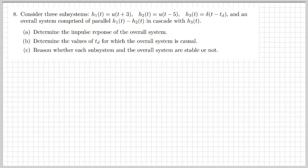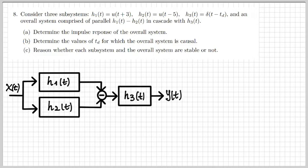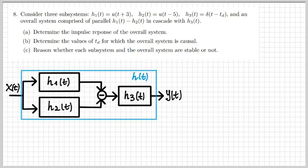Let's move on to another exercise. Here we have three subsystems h1, h2, and h3, where the overall system is constructed by putting two of them in parallel and then the parallel in cascade with the third one. The input x(t) goes through both h1 and h2 in parallel, with the output being their difference, and that result is fed in cascade into h3(t), whose output is the overall system output y(t).